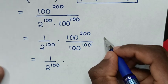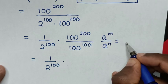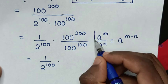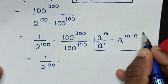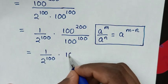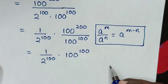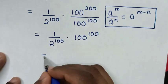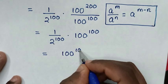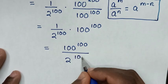So we'll apply the rule: a power of m over a power of n is equal to a power of m minus n. So, with the common base of 100, power of 200 minus 100 is power of 100. Then it will be equal to 1 times 100 power of 100, which is 100 power of 100, over 2 power of 100.